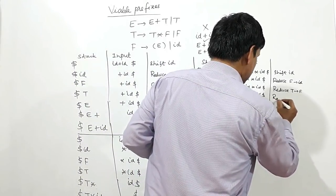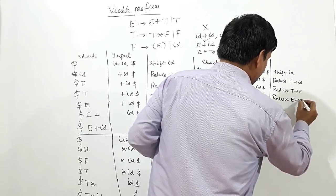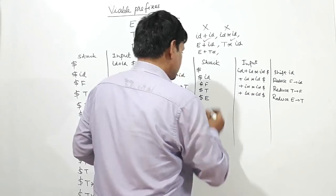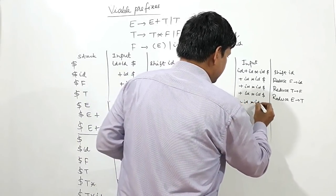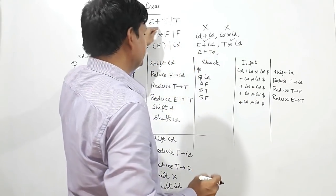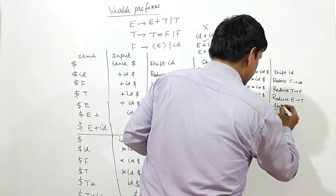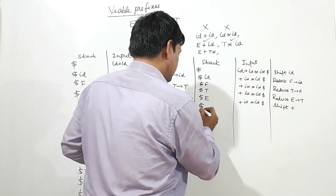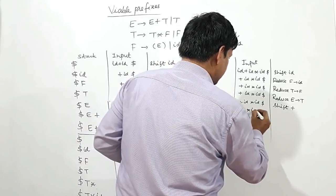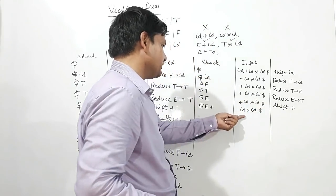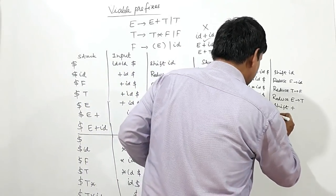T plus — no match — so I reduce T by E. It becomes dollar E plus ID star ID dollar. E plus — E plus is matching — so I shift plus onto the stack: dollar E plus ID star ID dollar. Now I shift ID onto the stack.